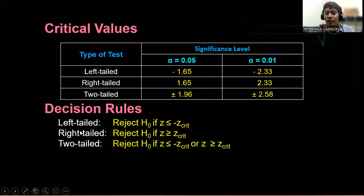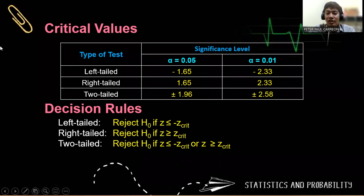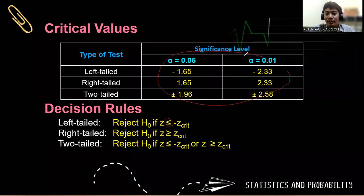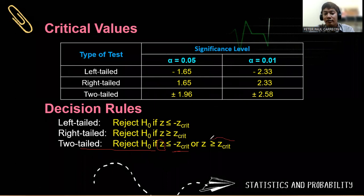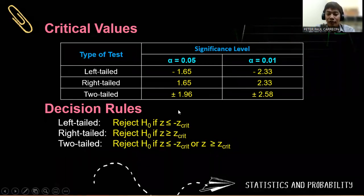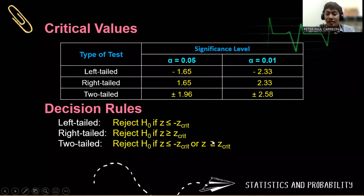For the decision rule: for a left-tailed test, we reject the null hypothesis if the z-computed value is less than the critical value. For a right-tailed test, we reject if it is greater than the critical value. Otherwise, we fail to reject the null hypothesis. For a two-tailed test, if the z-computed is negative, we compare it to the negative z-critical; if positive, we compare it to the positive z-critical. If the inequality statement is false, we fail to reject the null hypothesis.